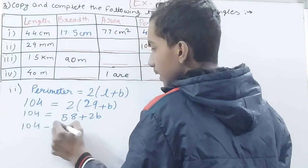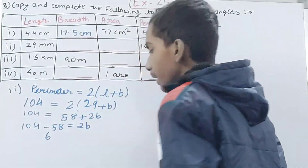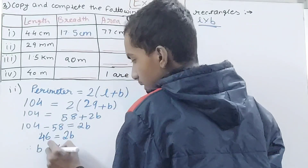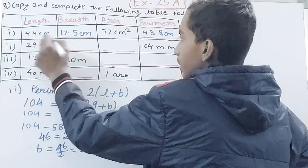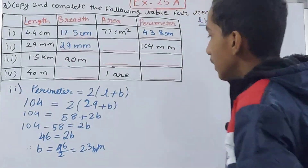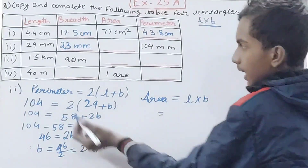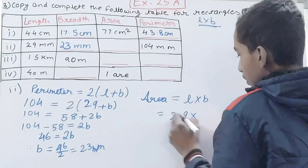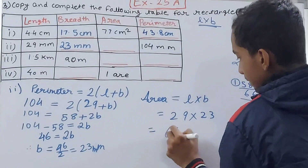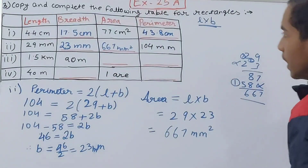So 104 − 58 = 2b, giving 46 = 2b, therefore breadth = 23 millimeters. Now area = length × breadth = 29 × 23 = 667 square millimeters. So 667 square millimeters is the area of the second rectangle.